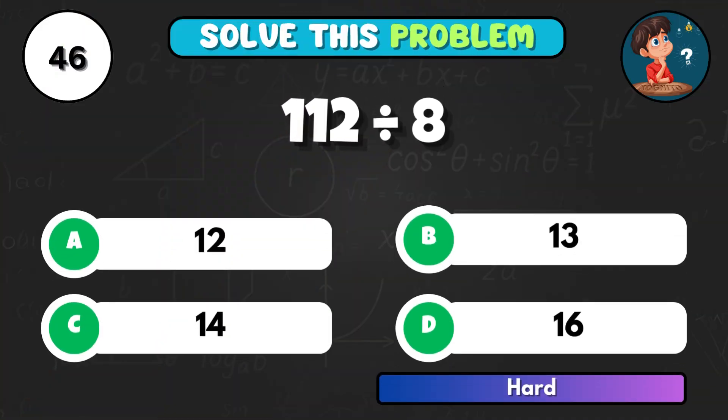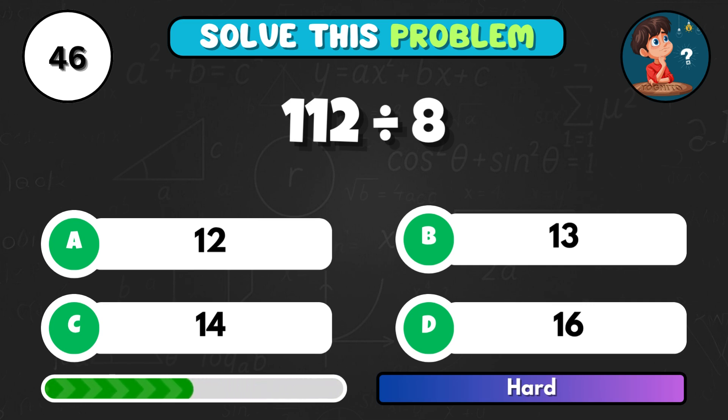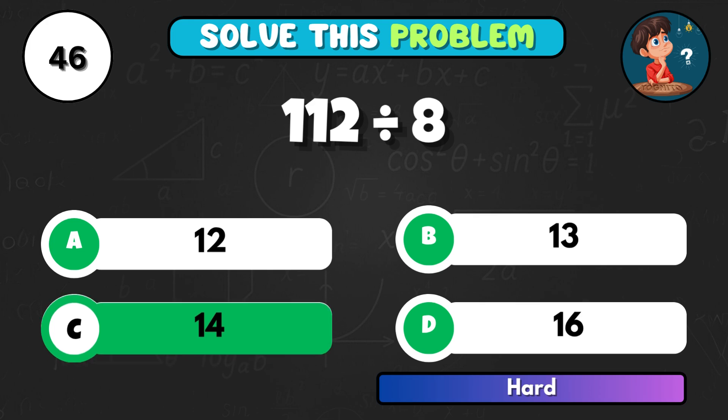112 divided by 8, what do you get? Correct answer C equals 14.